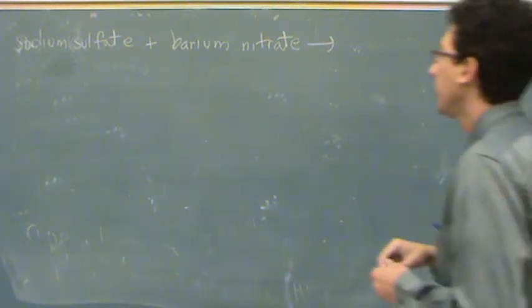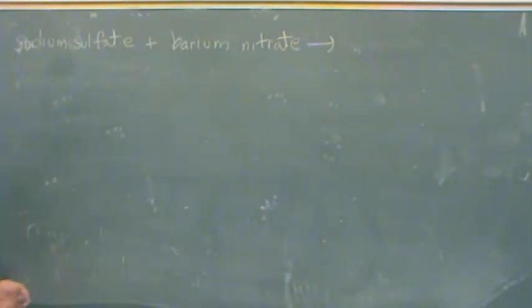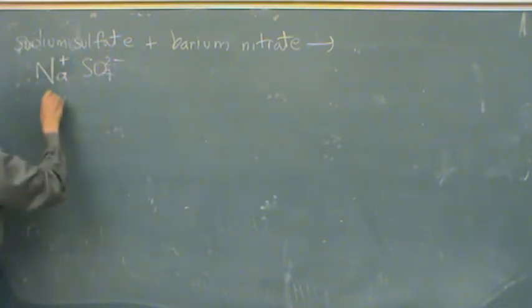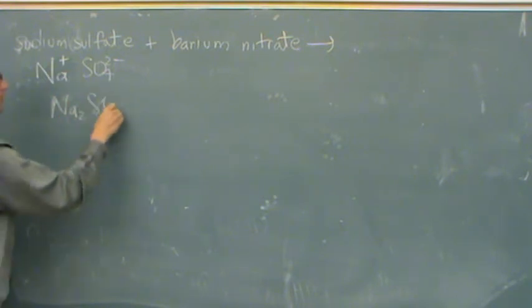You could get a question like this, where you have to know the name in order to do it. Sodium sulfate, Na plus with sulfate SO4 2 minus, that's Na2SO4.